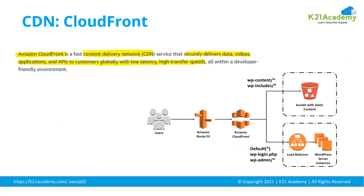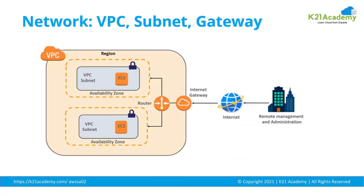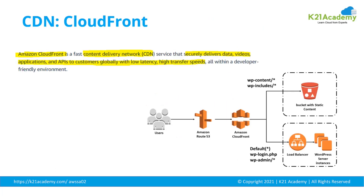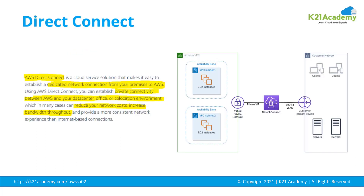So these are some high-level overviews about networking. As you go and create instances, AWS comes with a default VPC by default. You will be able to create additional VPCs, subnets, and gateways, and you can add more gateways if required. You can also configure load balancers, Route 53, and content delivery network CDN.